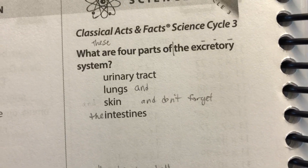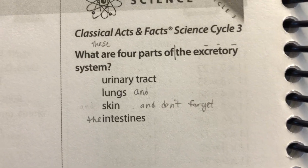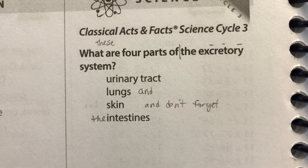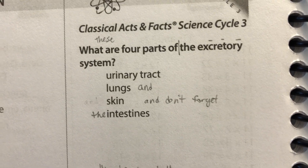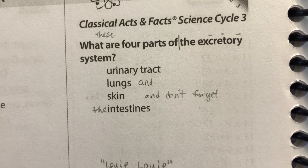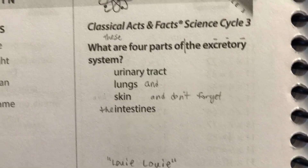CC Cycle 3 Week 7 Science. What are four parts of the excretory system? To the tune of Lue Lue.